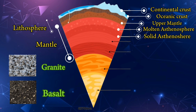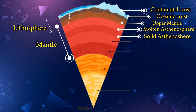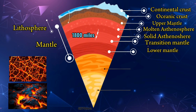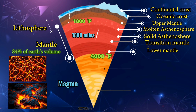The second layer of the earth is called the mantle. The mantle is the planet's largest layer and is about 1,800 miles thick. It is made up of extremely hard and dense rocks called magma. The temperature at the top of the mantle is about 1,800 degrees Fahrenheit, and at the bottom it is about 4,000 degrees Fahrenheit. The mantle is so massive it makes up 84 percent of the earth's total volume.